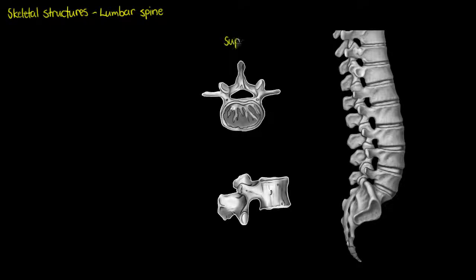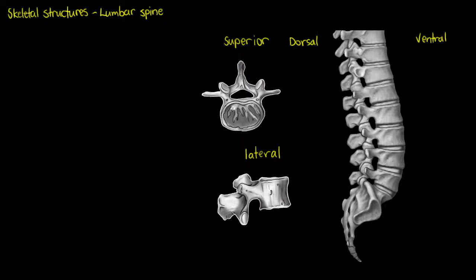Now let's start with our directional terminology. We have a superior view of our lumbar vertebrae here, and a lateral view, and also a lateral segment of our lumbar spine. We'll see that we've got the ventral and dorsal segments, so the front and the back. Front being ventral, dorsal being the posterior or the back.